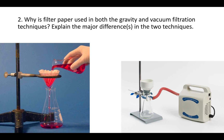The difference between gravity and vacuum filtration is how you get things through the mesh. On the left, you can see gravity filtration, where gravity is pulling your solution through the mesh. On the right is vacuum filtration, where a vacuum pump is connected to your glassware and sucks air through — that's what drives your solution through the filter paper. Those are the major differences between the two techniques.